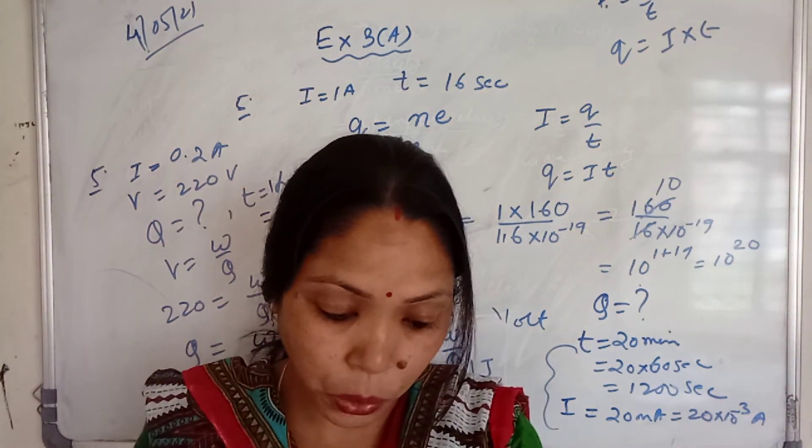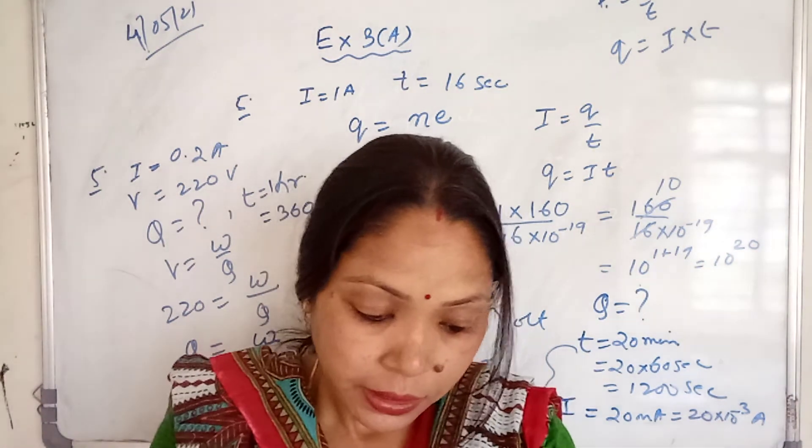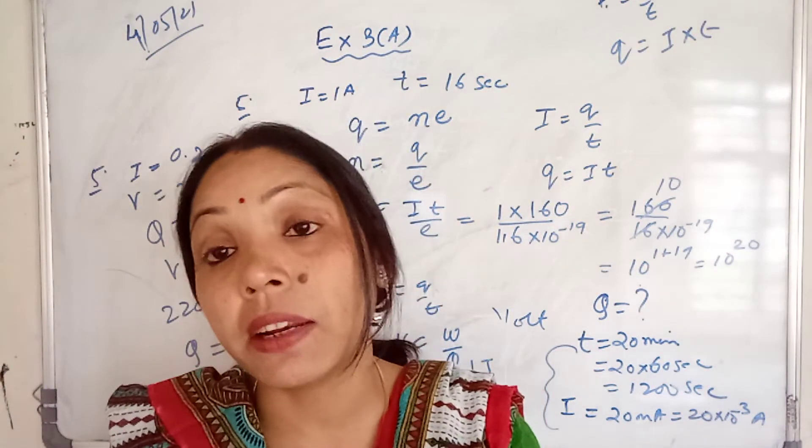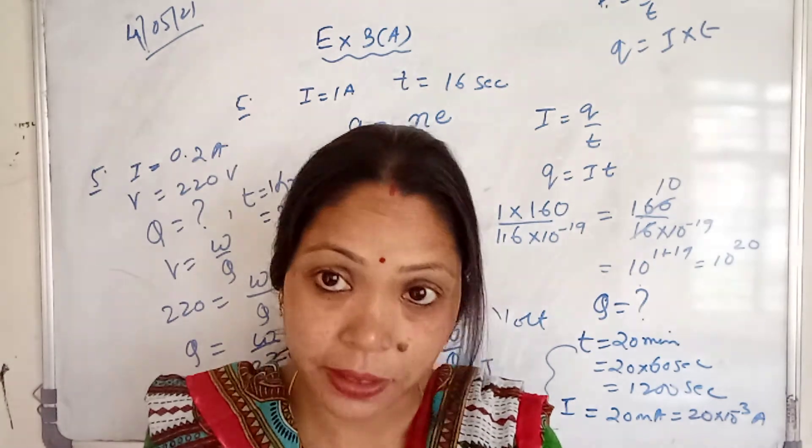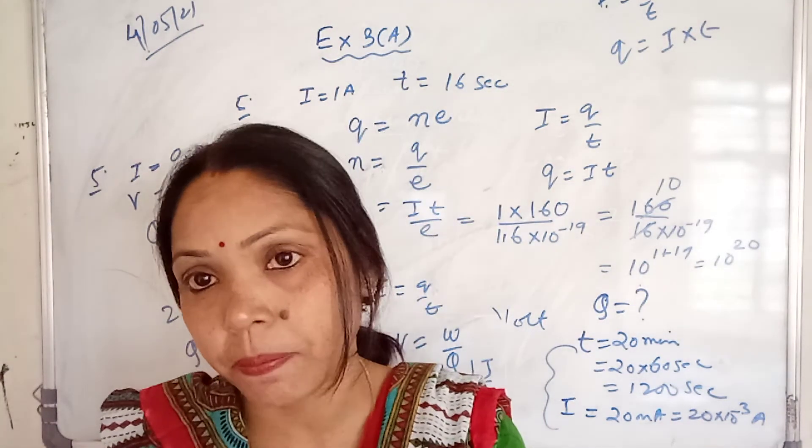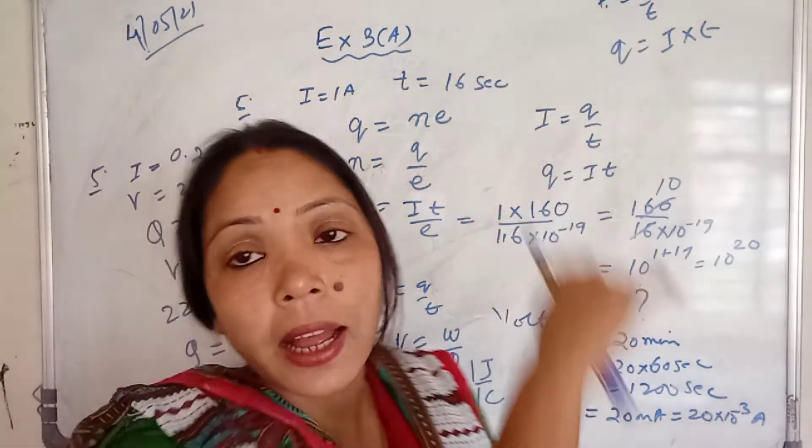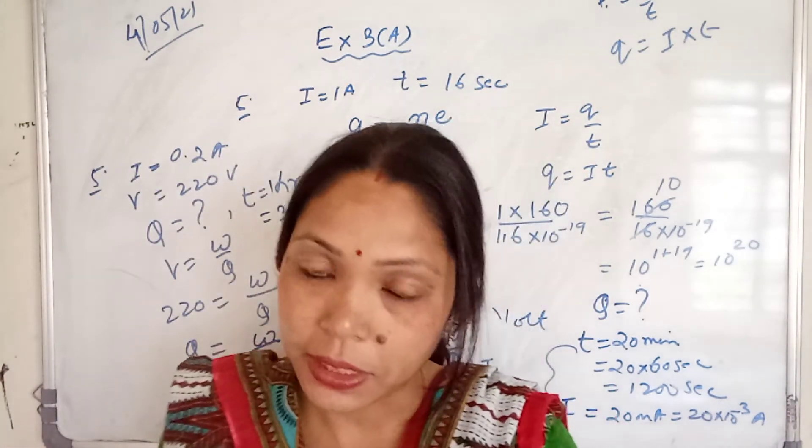Here again Q is given 500 coulomb, T is given 10 minutes. Let's convert this 10 minutes into seconds, that is 10 into 60, like 600 seconds. Then again use this formula: I equals Q by T.